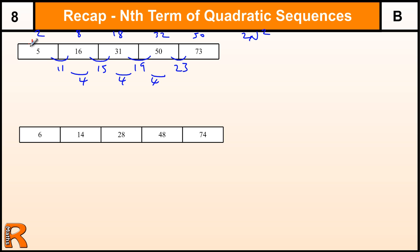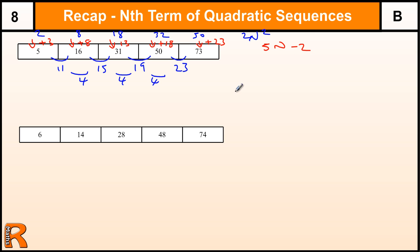From here to here, what have I got to do? I've got to add 3, add 8, add 13, add 18, and add 23. Now this red sequence is what I've got to do to 2n squared to get to the sequence we want. The red sequence is going up by 5 each time, so it's based on 5n: 5, 10, 15, 20. And these red numbers are 2 less than the 5 times table. So it's 5n minus 2.